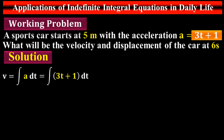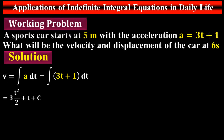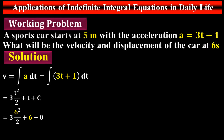Solution: velocity equals the integral of acceleration. Substituting acceleration = 3t + 1, we get the integral of (3t + 1) = (3t²)/2 + t + C. The arbitrary constant C will be 0 at the initial stage because at t = 0, substituting gives C = 0. Substituting t = 6, we get the velocity as 60 metres per second after 6 seconds.